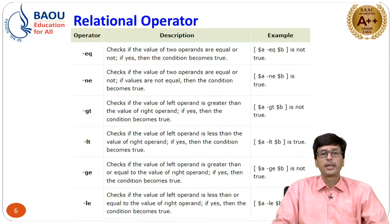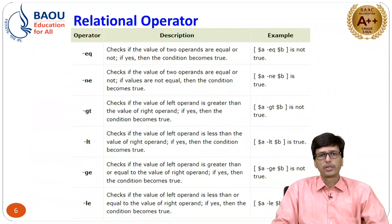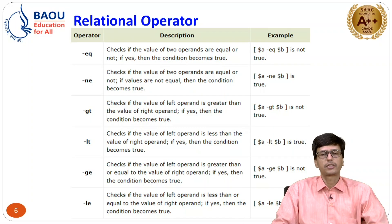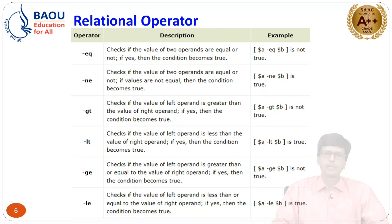The relational operators used in decision making statements are: -eq for equal, -ne for not equal, -gt for greater than, -lt for less than, -ge for greater than or equal to, and -le for less than or equal to. For case statements, the variable value can be an integer, character, or string.